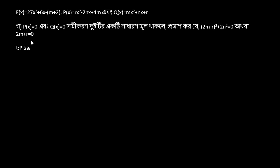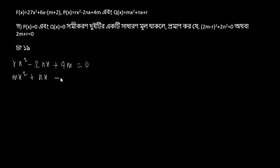First, let's form the two equations. The first equation is p(x) = 0, that is rx² + 2nx + 4m = 0. q(x) means mx² + nx + r. So q(x) = 0 gives mx² + nx + r = 0.